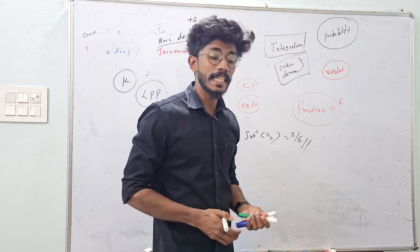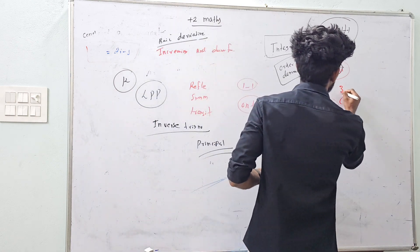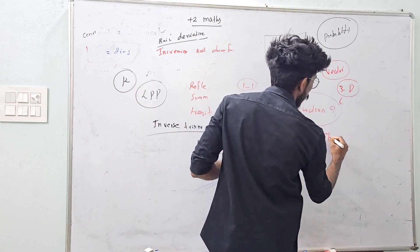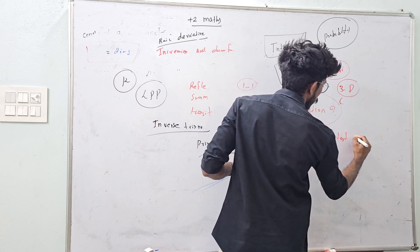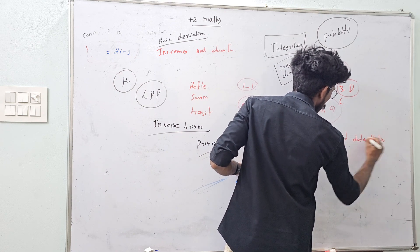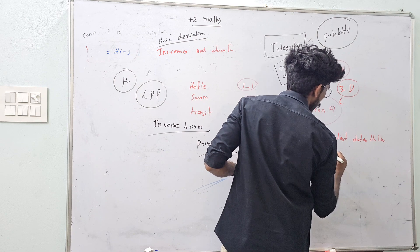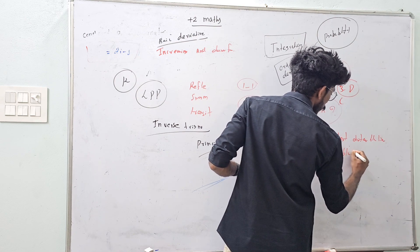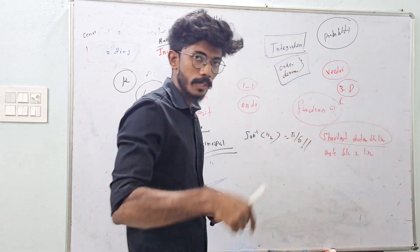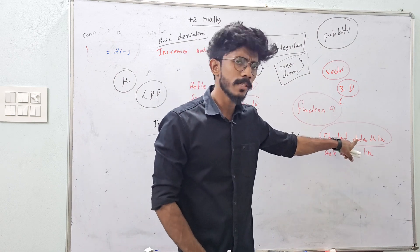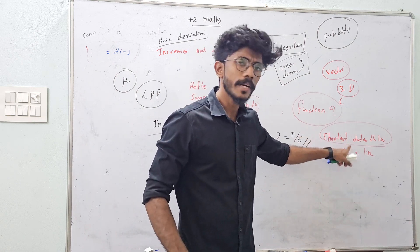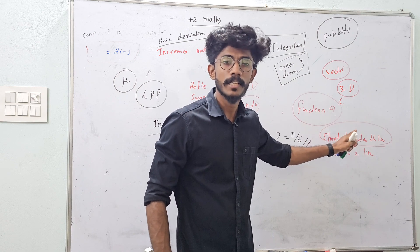Now, in the 3D chapter, I will study: shortest distance between lines, and angle between two lines. The shortest distance video is in the description. I will do angle between lines. In these two topics, I will ask one question — one question for three marks or four marks.